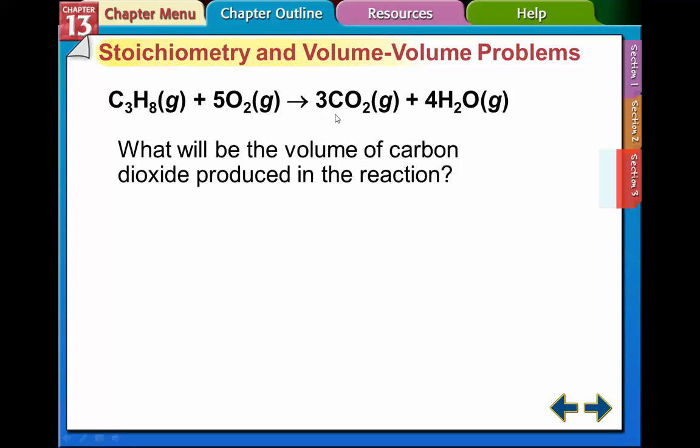The carbon dioxide is going to go on the top. The propane is going to go on the bottom again, just like we did before. Only we're substituting carbon dioxide on top instead of oxygen. So we can multiply these across and we get 1.05 liters of CO2.